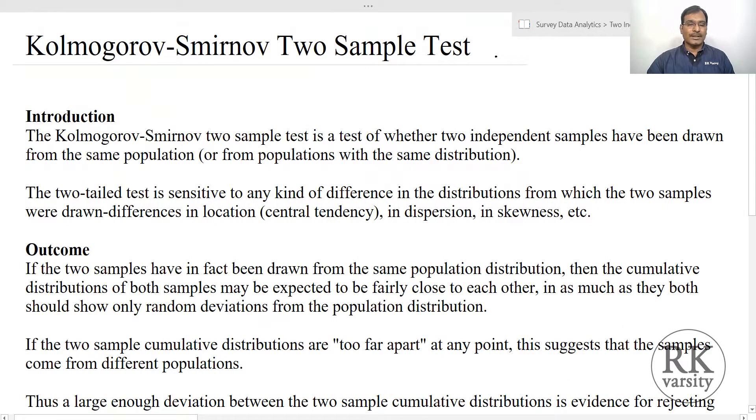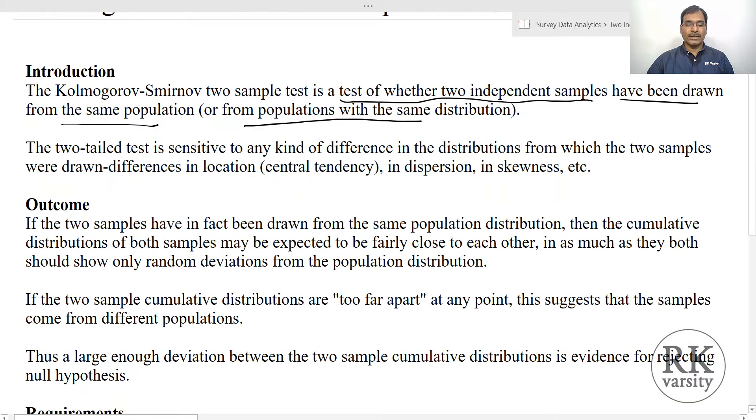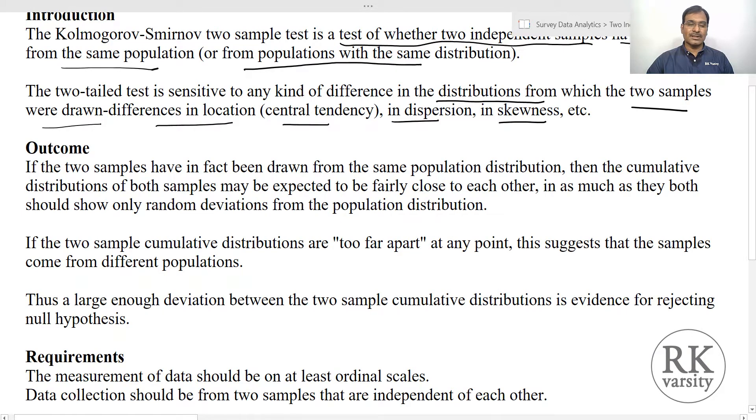The Kolmogorov-Smirnov two-sample test tests whether two independent samples have been drawn from the same population or from populations with the same distribution. The two-tailed test is sensitive to any kind of differences in the distribution, whether in location or central tendency, in dispersion, or in skewness.